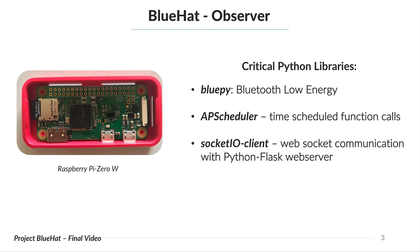Our second piece of hardware is observer devices, which are Raspberry Pi Zeros. These devices use libraries that are critical dependencies for the program running on them. First there is BluePy, which allows us to scan for our advertising devices. Then there is AP Scheduler, which allows us to periodically call our advertiser scan methods at a specified interval. Lastly there is Socket IO Client, which gives us the ability to quickly create a socket connection and send scanned advertiser data to our backend Python Flask server. Now let's look at some important algorithms that we implemented to process received signal strength data sent from observers to our server.